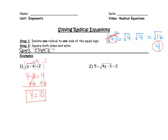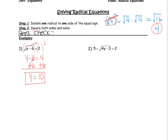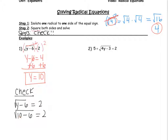You must, must, must check these equations because sometimes they don't work out. When we do a check, we always check into the original equation. We're going to plug in what we got for y — we got y was 10. So what is 10 minus 6? You should be telling me 4. Now what's the square root of 4? You should be telling me 2. Does 2 equal 2? Yes. So this works out nicely.